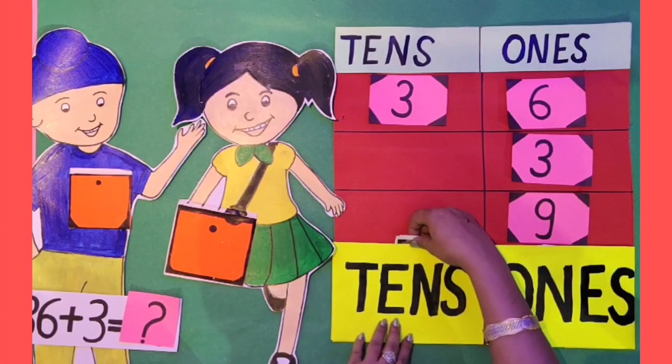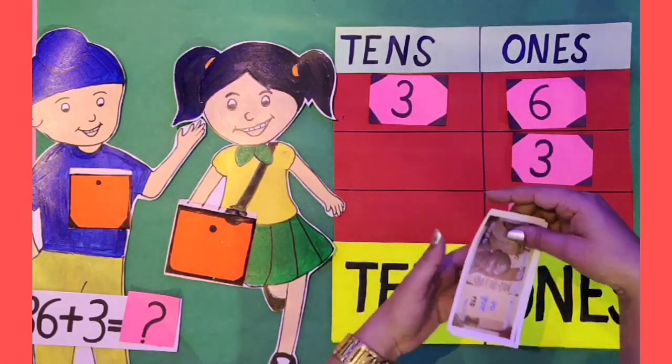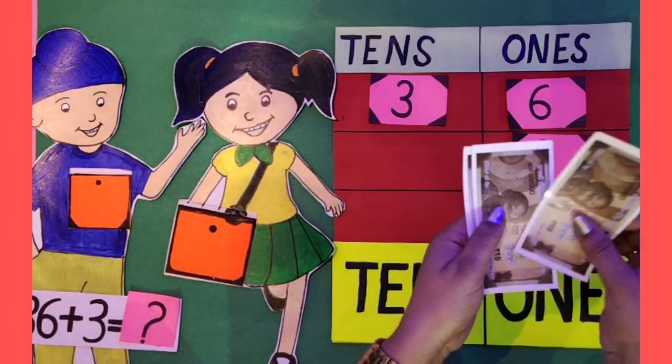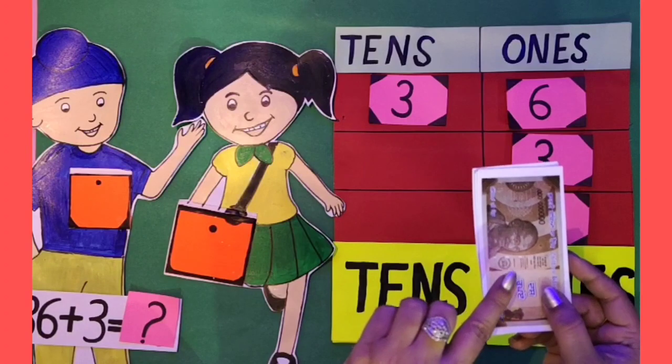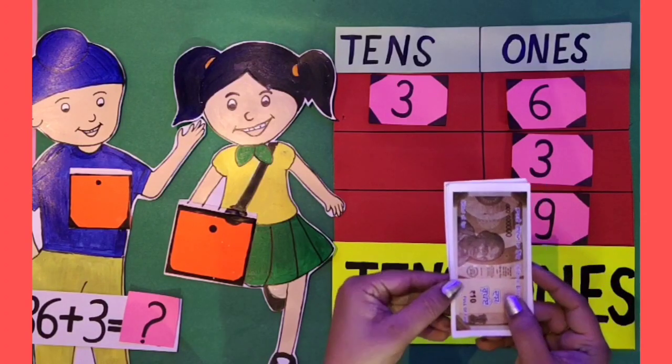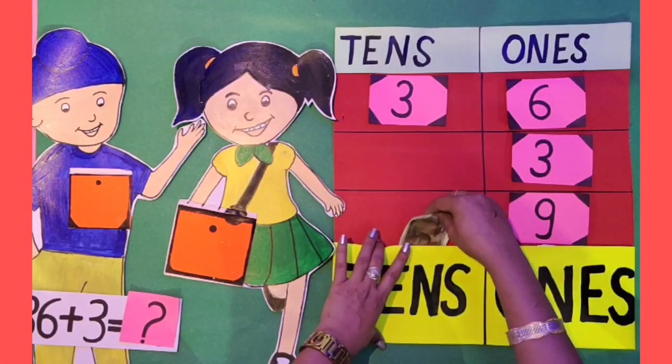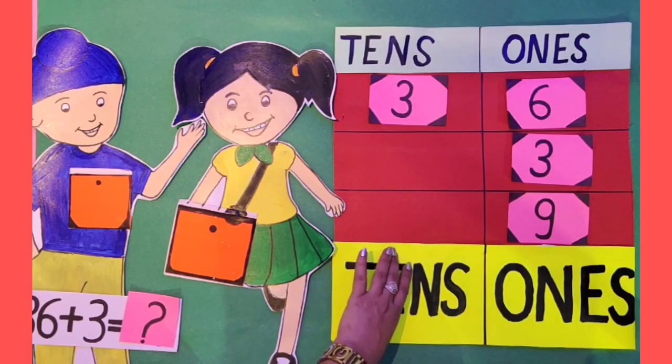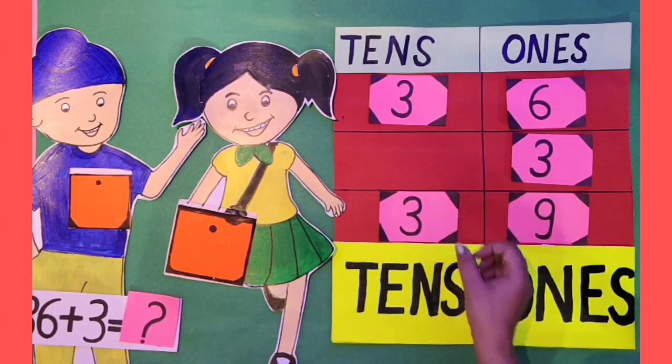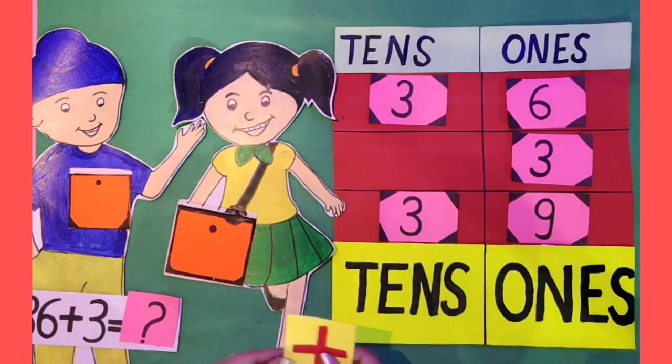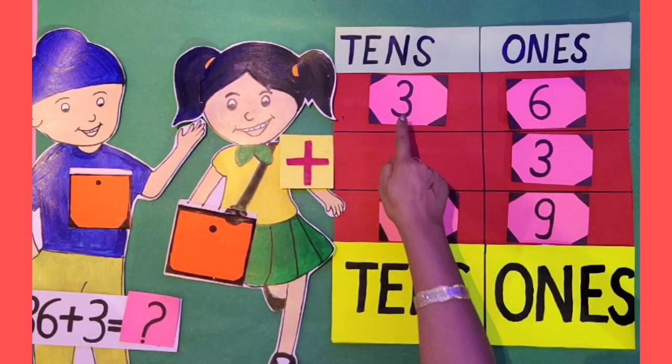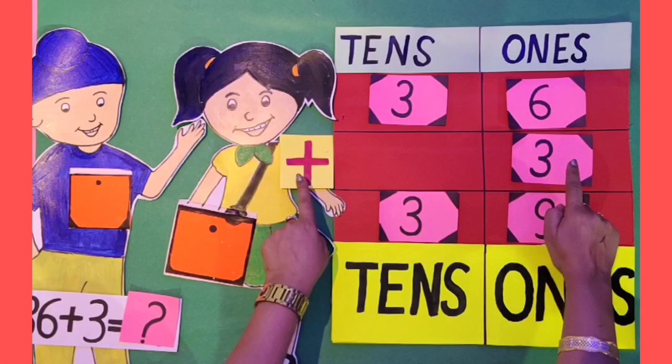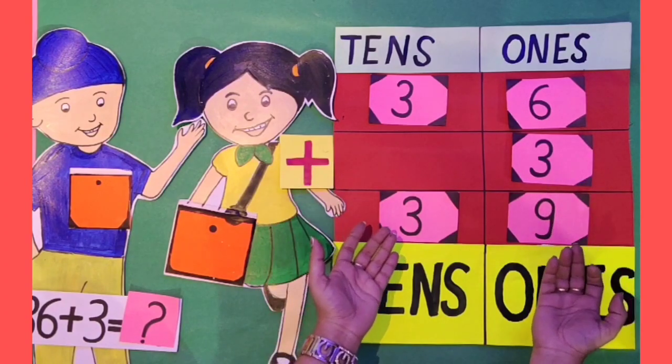Now, let's count all 10 rupee notes. 1, 2, 3. There are 3 ten rupee notes. That means 3 tens. So, kids, we come to know that 36 plus 3 is equal to 39.